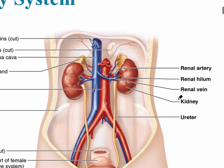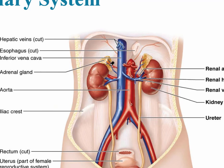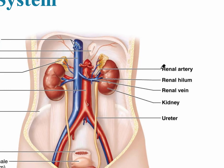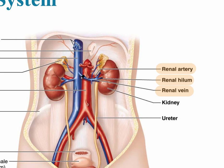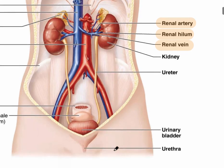This slide shows the anatomy of the urinary system. The kidneys are located retroperitoneally. The blood source that leads to the kidneys is the renal artery coming off of the aorta. The renal hilum is on the concave medial surface where the renal artery enters and the renal vein exits to return deoxygenated blood back to the inferior vena cava. The ureters lead to the urinary bladder.